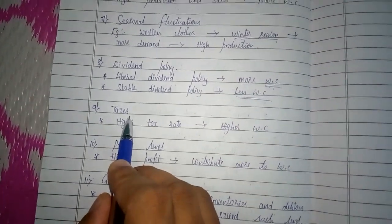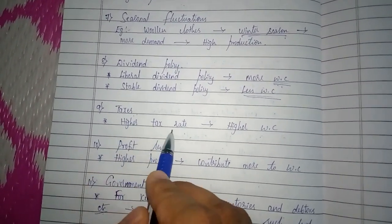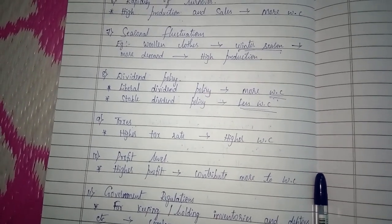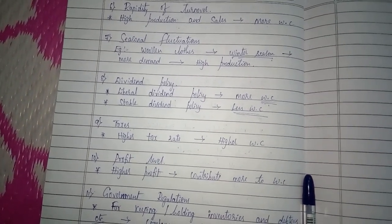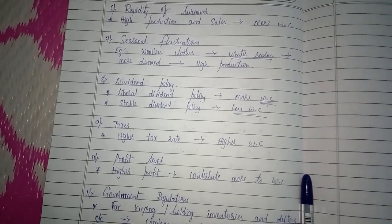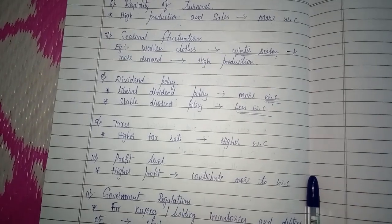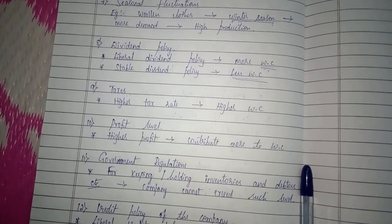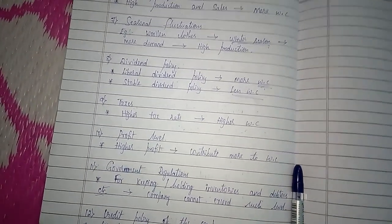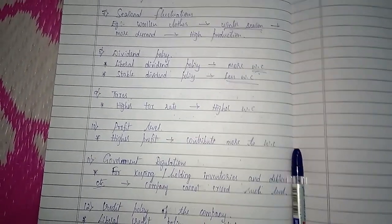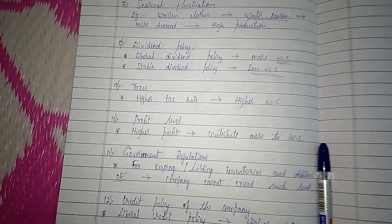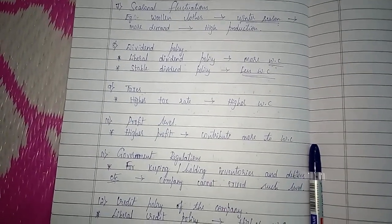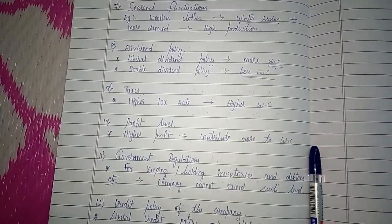The ninth factor is taxes. If the company must pay a higher rate of tax to the government, it needs higher working capital. If the tax rate is lower, it needs less working capital. The tenth factor is profit level. If the company earns higher profit, it can easily contribute more to working capital. If profit is insufficient, the company cannot depend on profit to meet its working capital requirements.